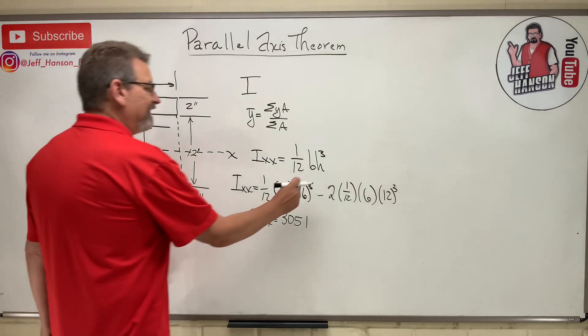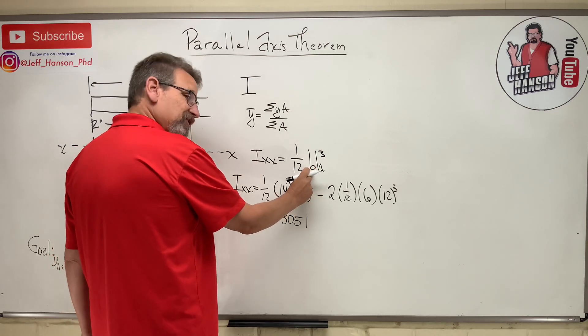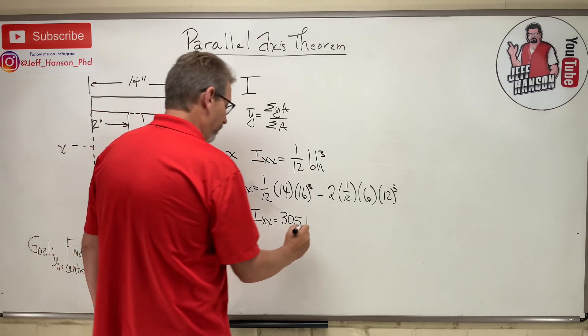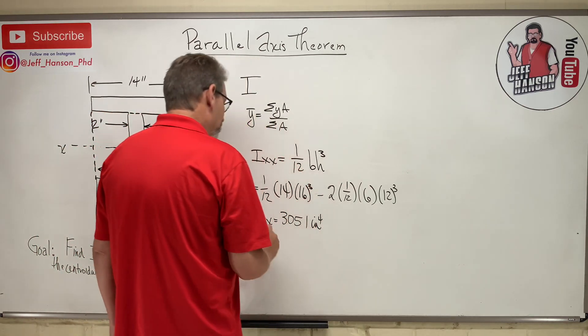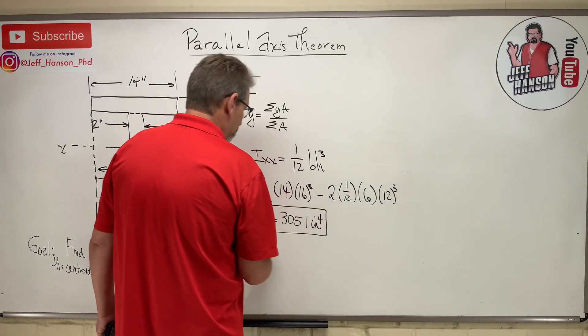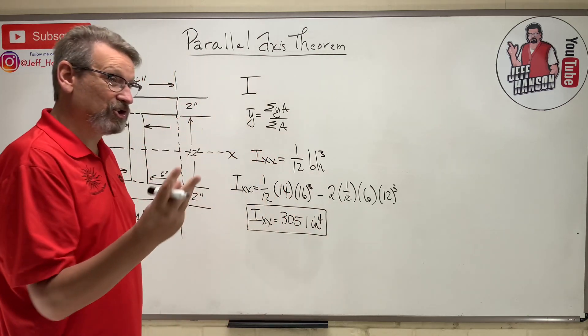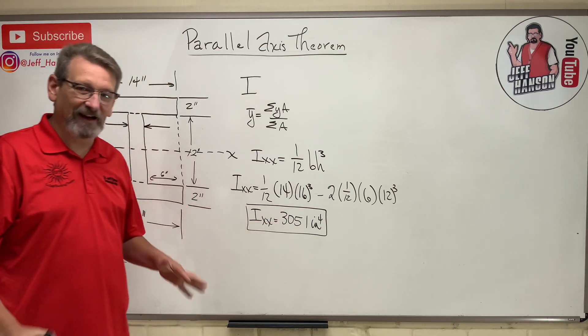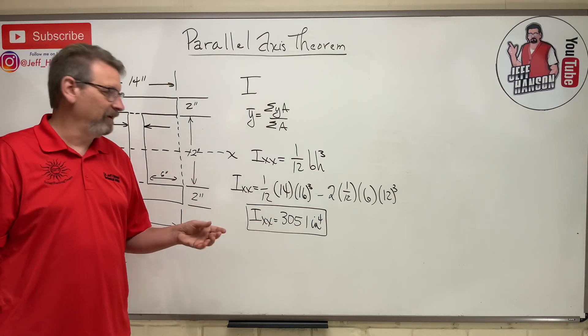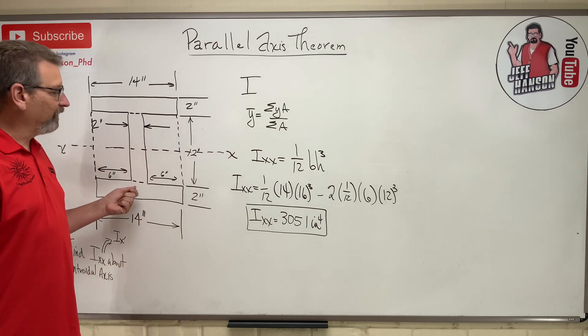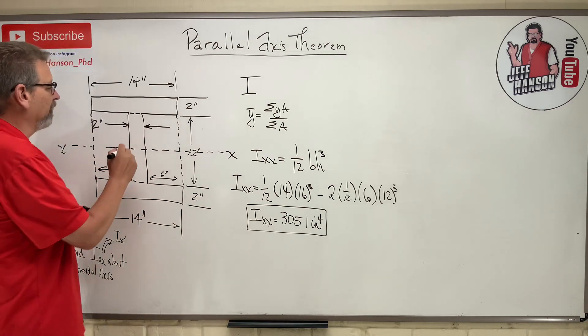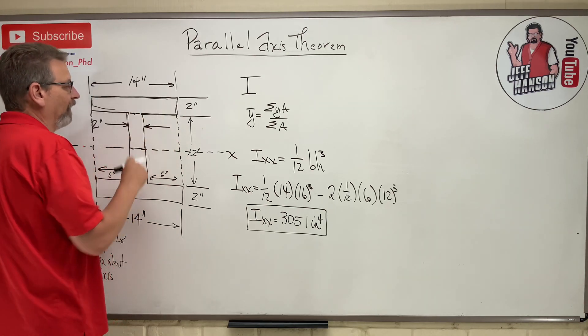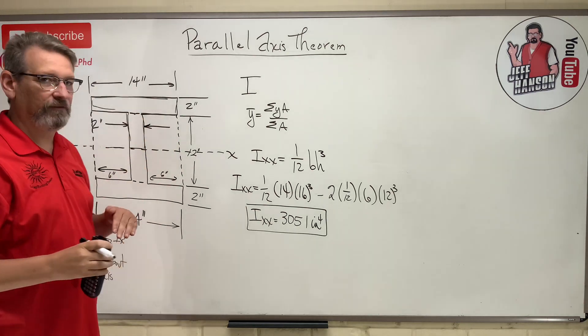3051 what? Well, we did base times height cubed. The base was in inches. The height was in inches, so that's inches to the fourth. Now you might be thinking, wait a minute. Inches squared is area. Inches cubed is volume. What the heck is inches to the fourth? It's not a physical thing. It's not like space time.